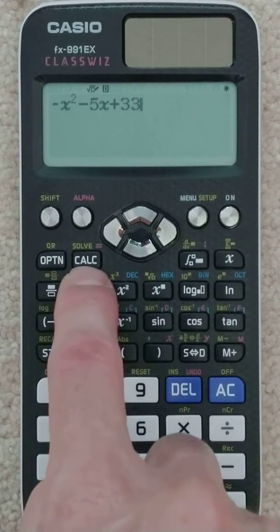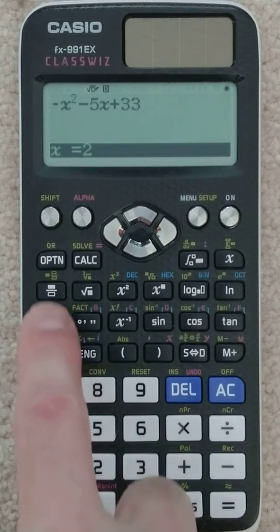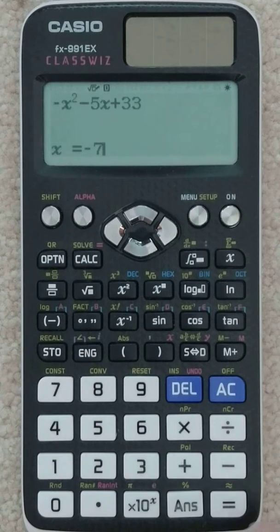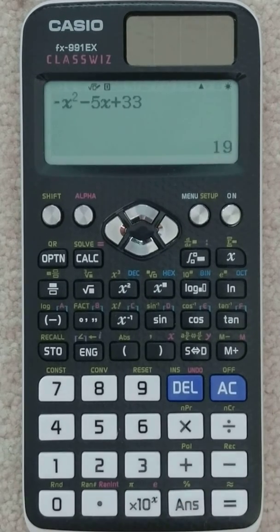And then what we do is we hit calc. Calc says what do you want x to be. Right now I think it's 2, so we just type in what we want it to be. We want it to be negative 7, and then we hit equals, and then we hit equals a second time, and we get our result, 19. So that is the value of the function when x equals negative 7.